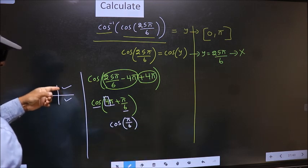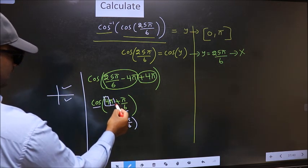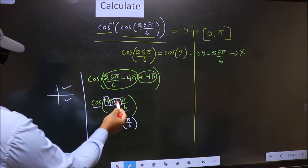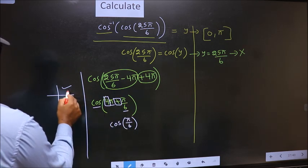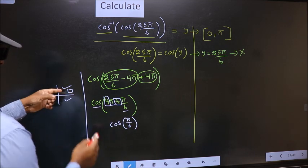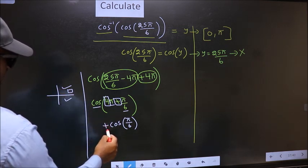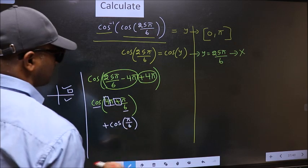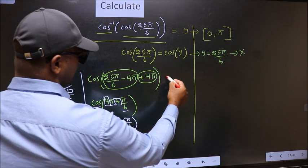So now to select the quadrant we should look at this symbol. Here we have plus that means angle lies in the first quadrant. And in the first quadrant cos is positive. So put plus. Now on the other side no change.